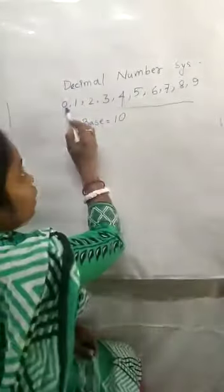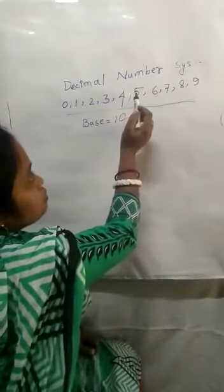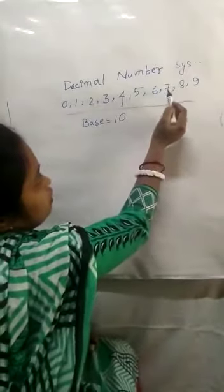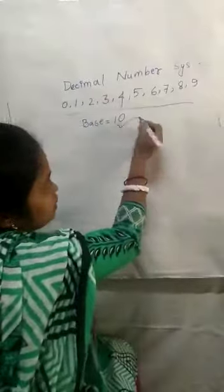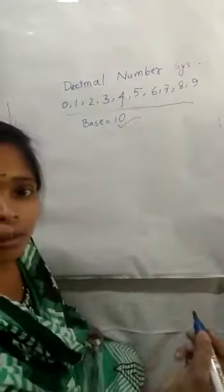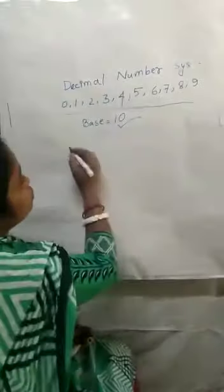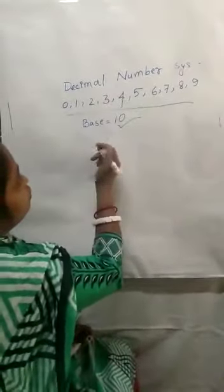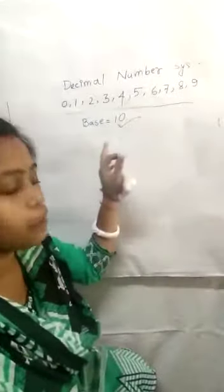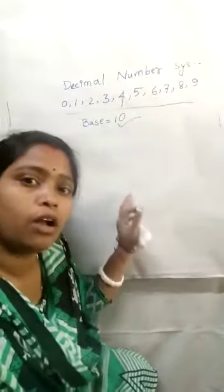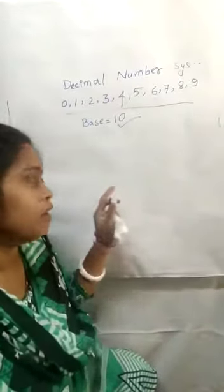How is the base 10? We count 1, 2, 3, 4, 5, 6, 7, 8, 9, 10 — that gives us 10 digits total, so the base is 10. We are using this decimal number system in our regular life.